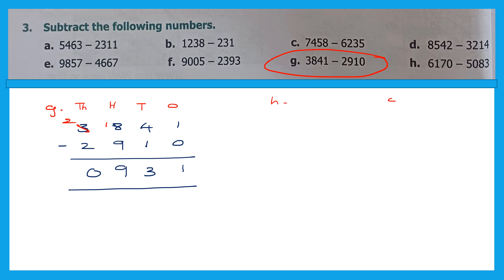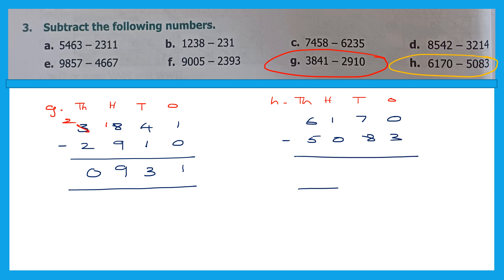Now let's do question H. Write ones, tens, hundreds, thousands. The question is 6,117 minus 5,083. Ones: 7 minus 3 — wait, the ones digit here gives 0 minus 3, can't do, so borrow from 1 (tens): 1 becomes 0 and ones become 10. 10 minus 3 is 7. Tens: 6 is smaller than 8, borrow from 1 (hundreds): 1 becomes 0 and tens becomes 16. 16 minus 8 is 8. Hundreds: 0 minus 0 is 0. Thousands: 6 minus 5 is 1. The answer is 1,087.